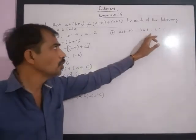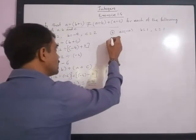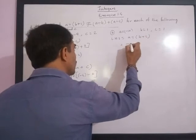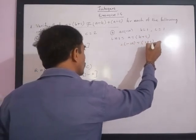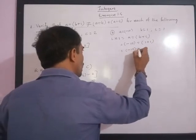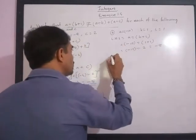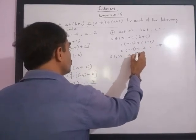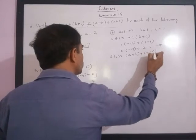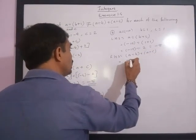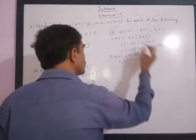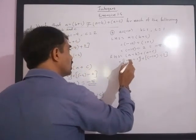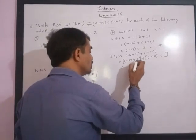The second set of values is a equal to negative 10, b equal to 1, and c equal to 1. LHS is equal to a divided by bracket b plus c, which is negative 10 divided by bracket 1 plus 1. This is equal to negative 10 divided by 2, which gives negative 5.